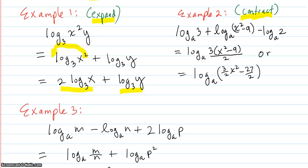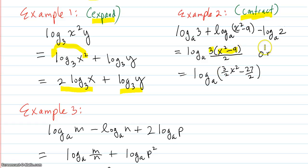Example 2: contract back to where it came from. Where you have a plus, you multiply; where you have a minus, you divide. So you get log base a of the multiplied terms divided by the subtracted terms. That's going backwards with the rule. Or you could bring the 3/2 coefficient in as an exponent — both forms are correct.